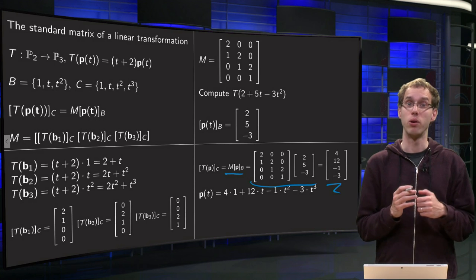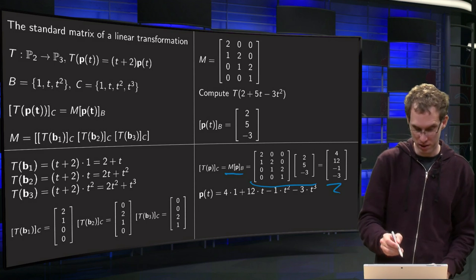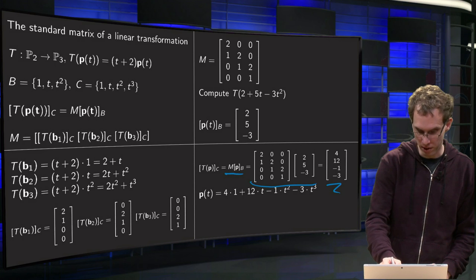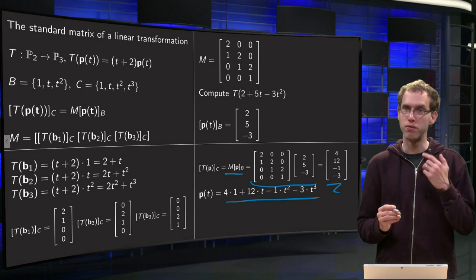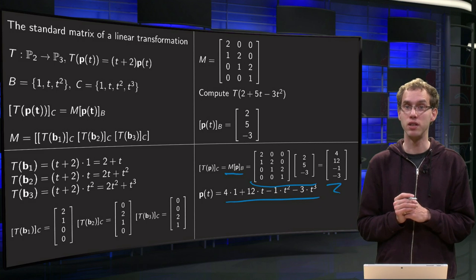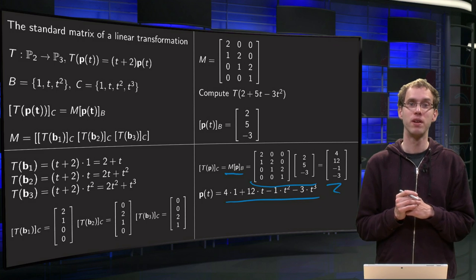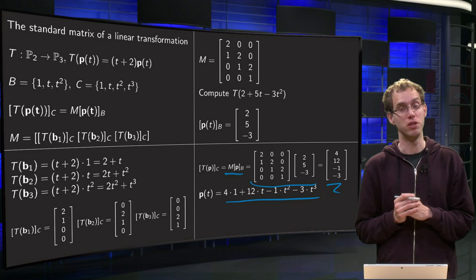That other vector is our coordinate vector of the image in the basis C. So we can find the image of p(t) which is 4 + 12t - 1t² - 3t³. And there we have the image of our vector p. So that is an example of how we can use this matrix.